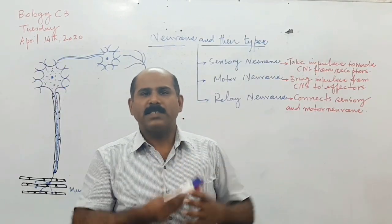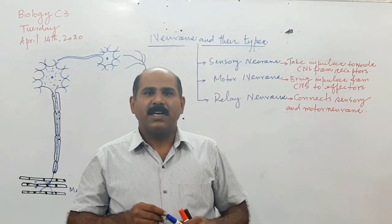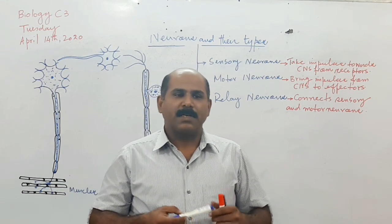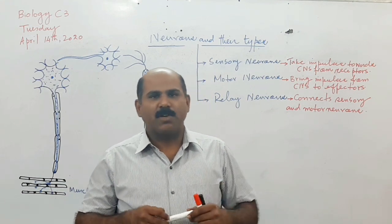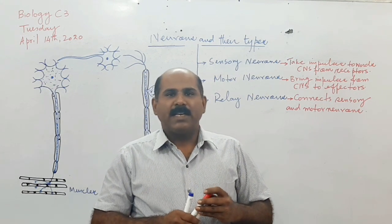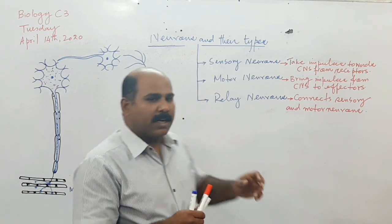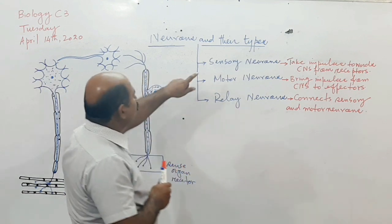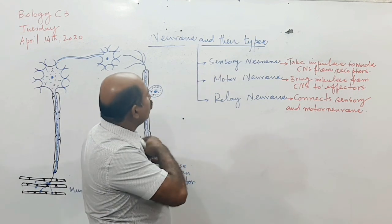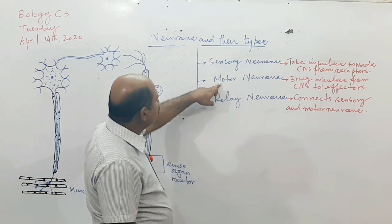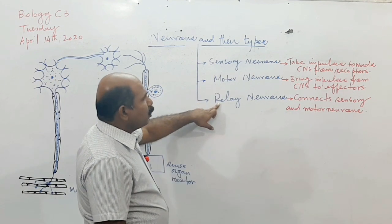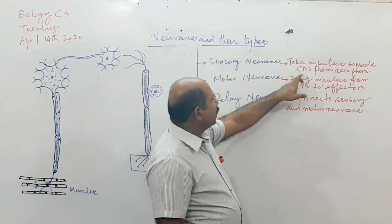Now we will discuss the different types of neurons. As we have discussed the basic structure, there are three main types of neurons: sensory neurons, motor neurons, and relay neurons.